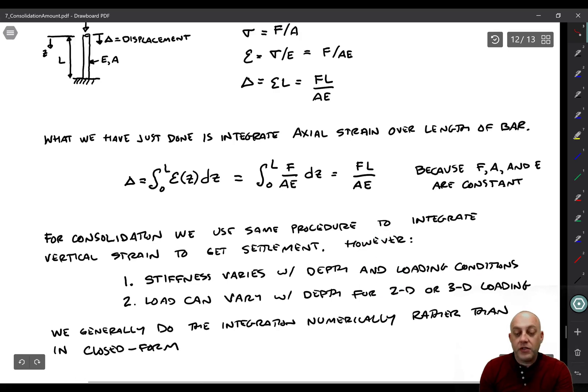So for consolidation, we do the same procedure. We integrate strain with depth. And what we do is to first find the strain function, and then usually we discretize it into thin layers. So it turns out that there's not going to be a simple equation that we can conveniently use to get a closed form solution.